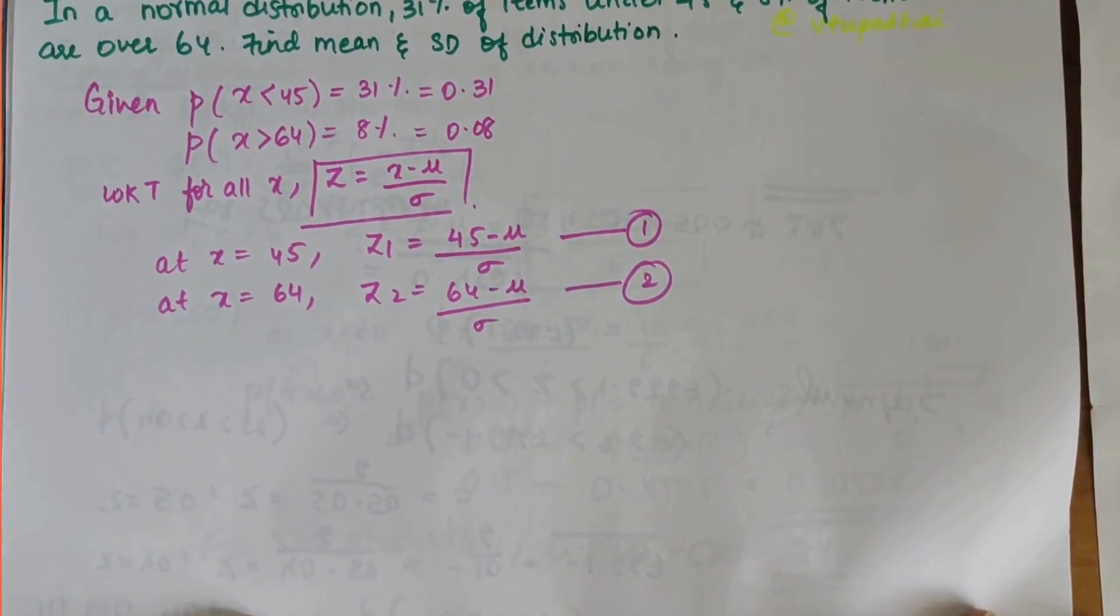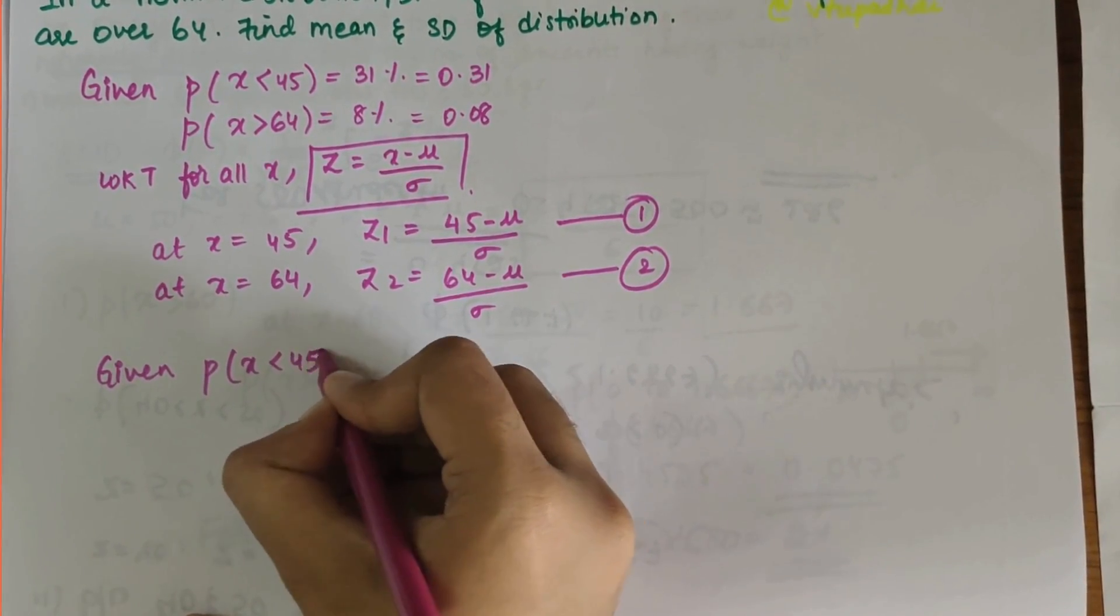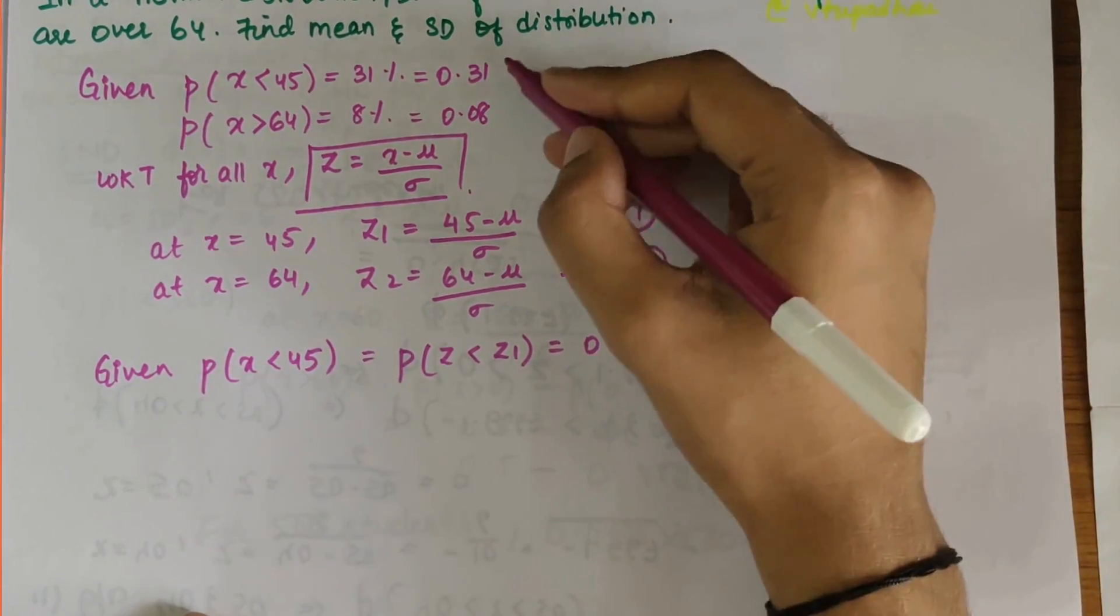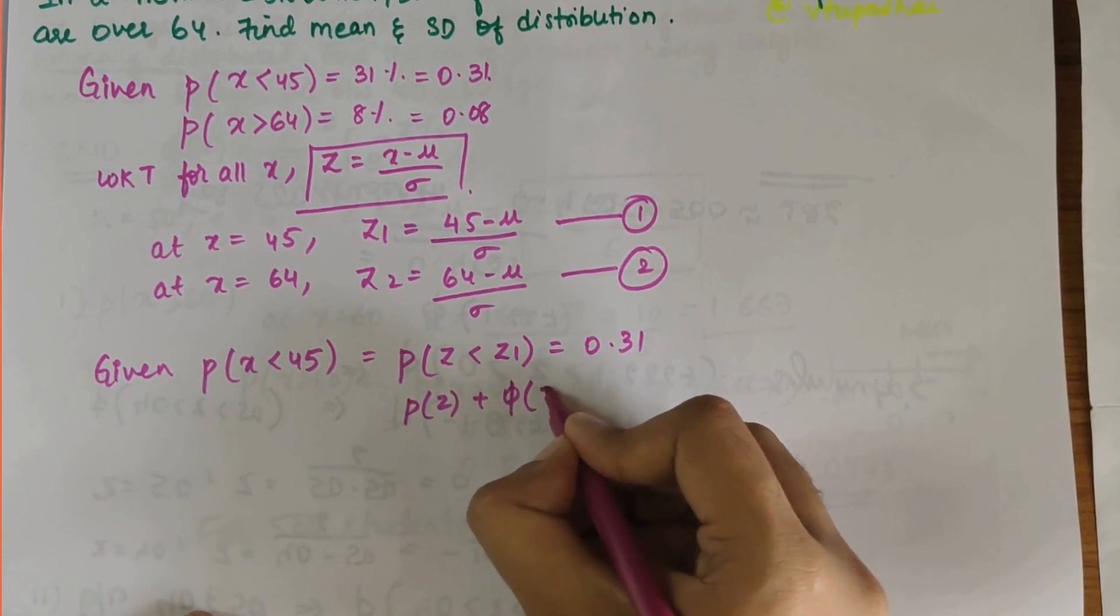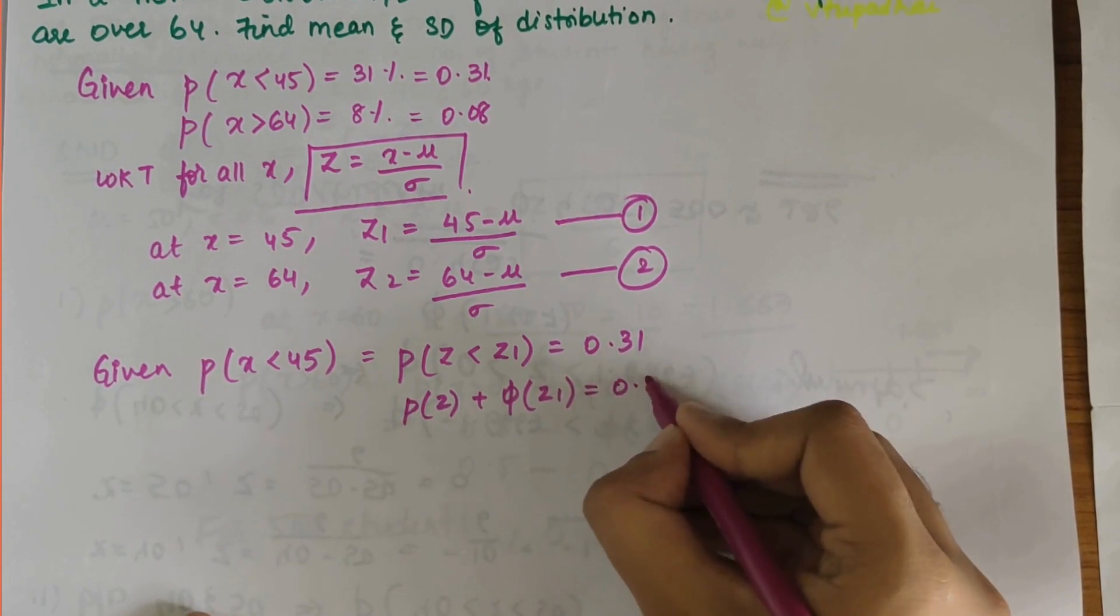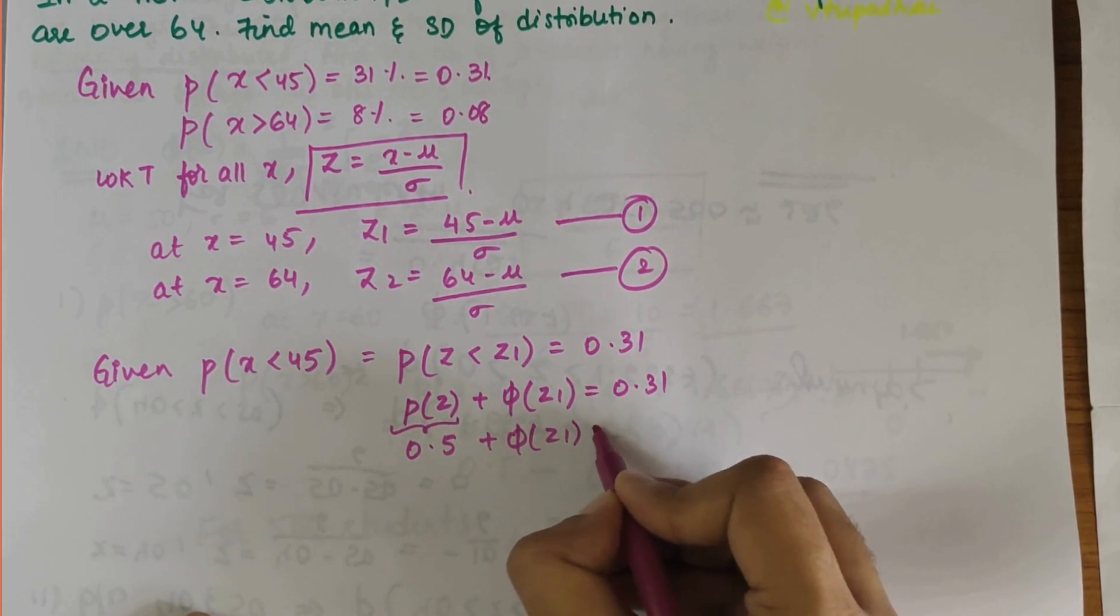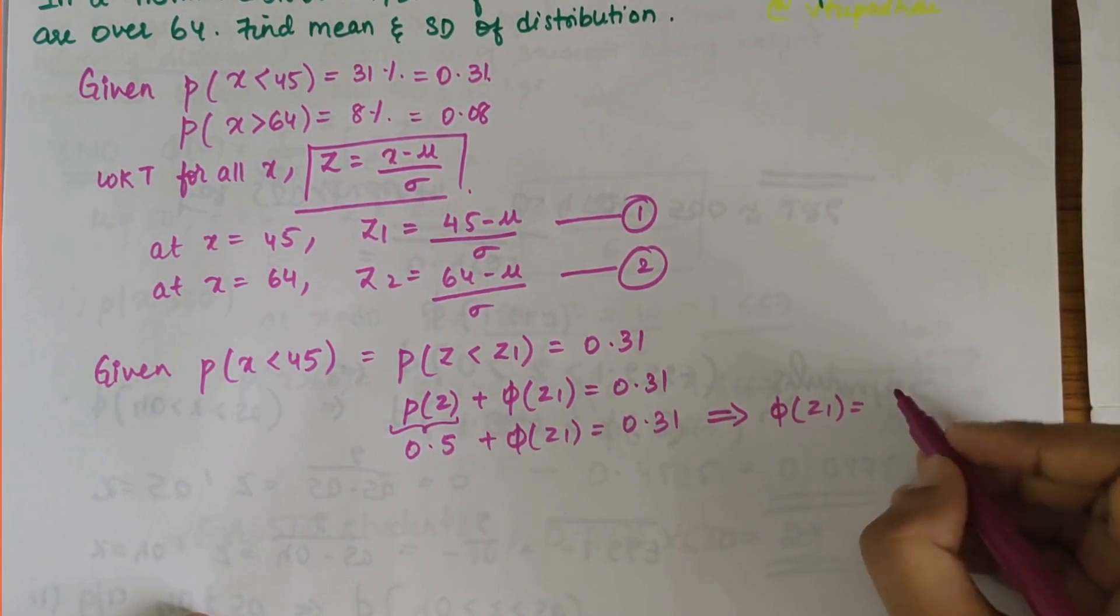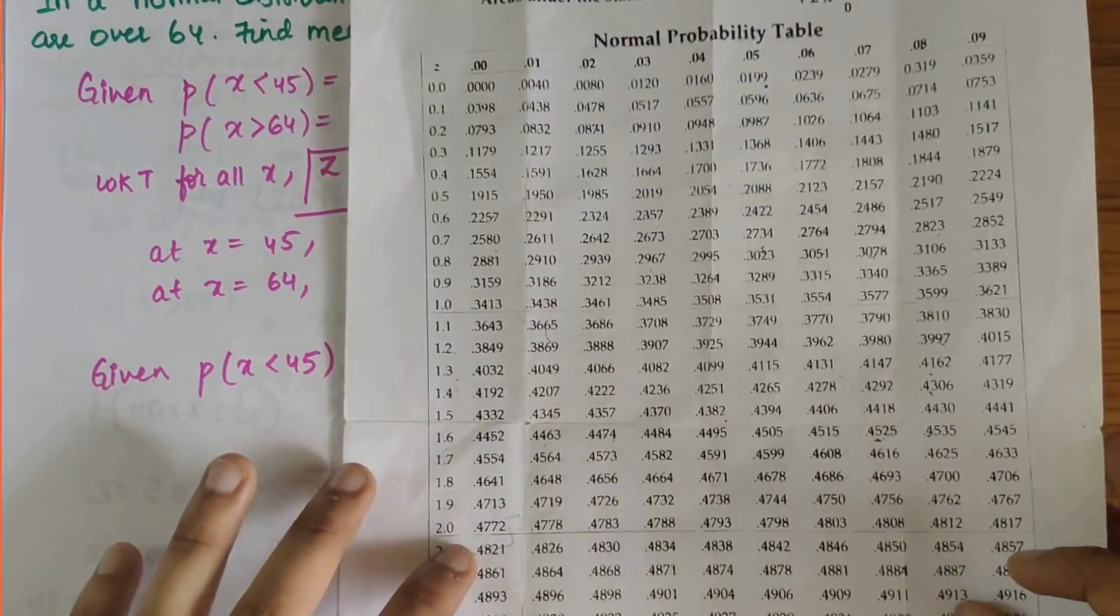We have given that P(X < 45), that means P(Z < Z1) = 0.31. This can also be written as P(Z) + φ(Z1), because the less than sign is used so we can use the addition symbol. We know that P(Z) = 0.5, so φ(Z1) = 0.31 - 0.5, which gives φ(Z1) = -0.19.